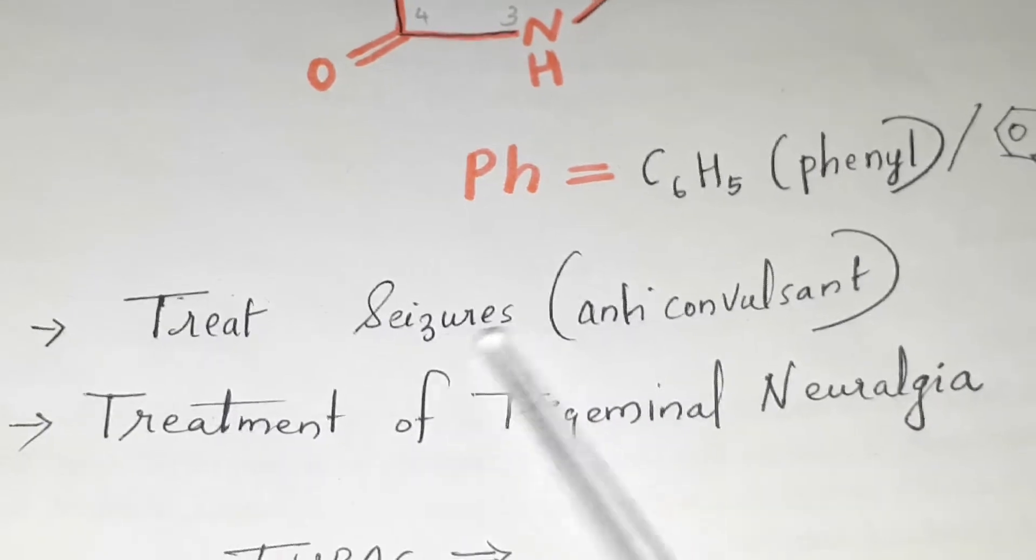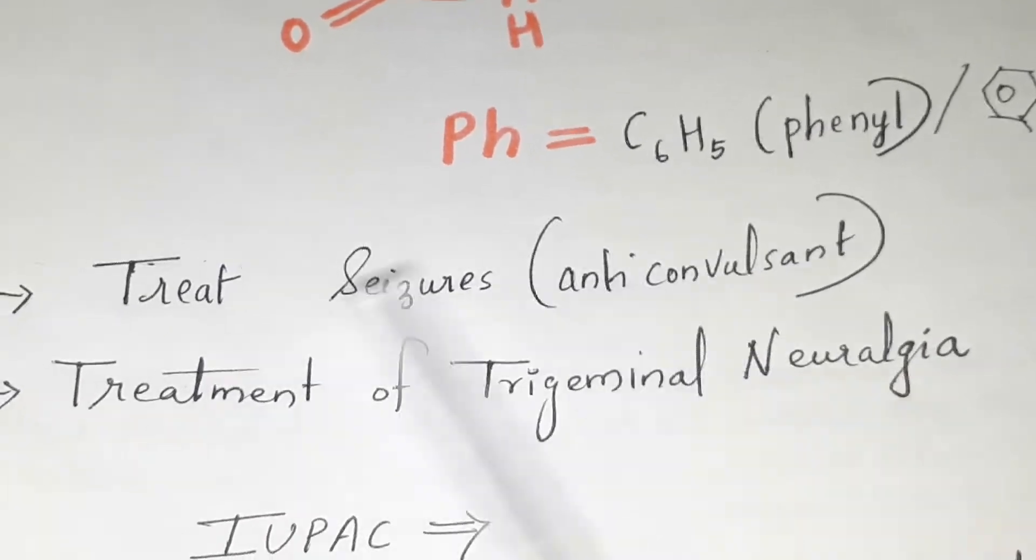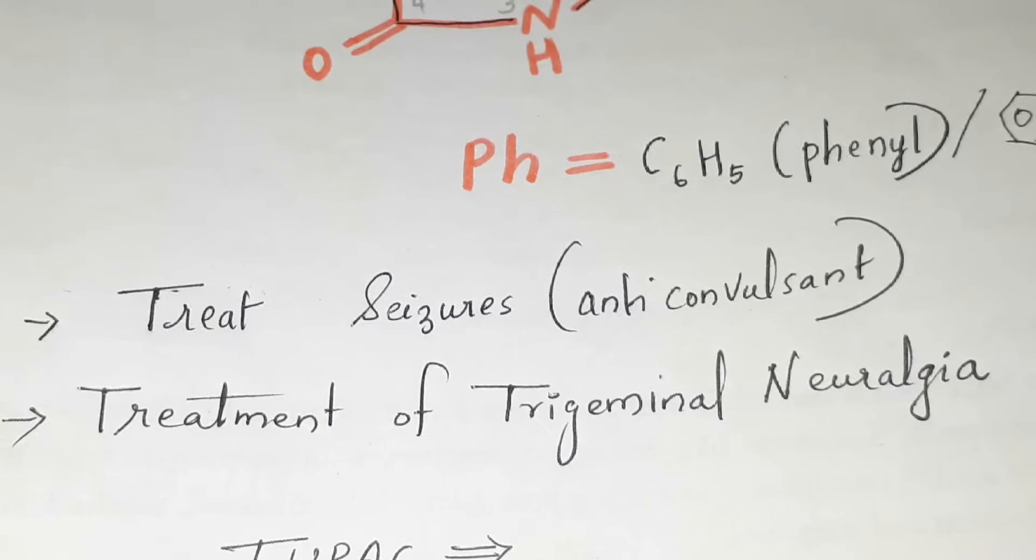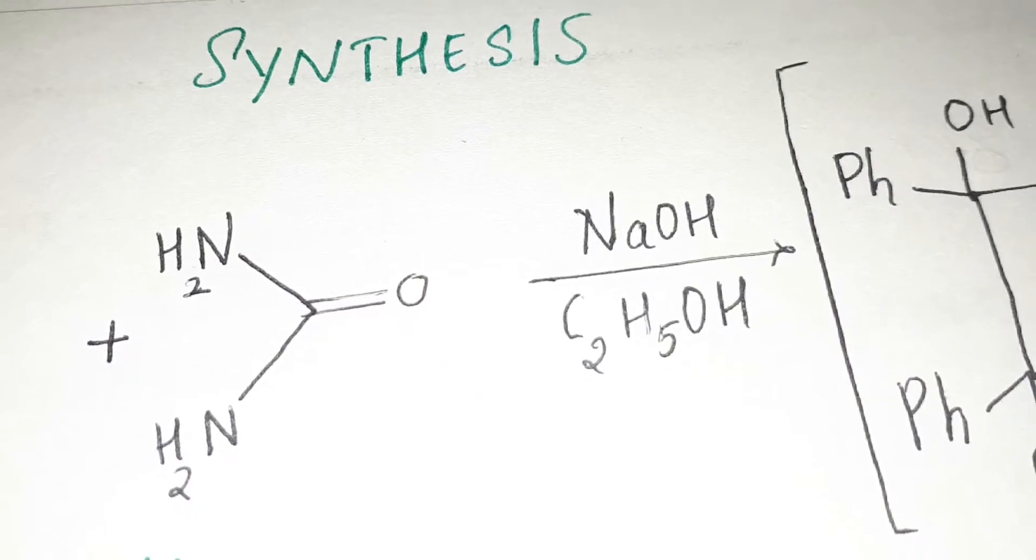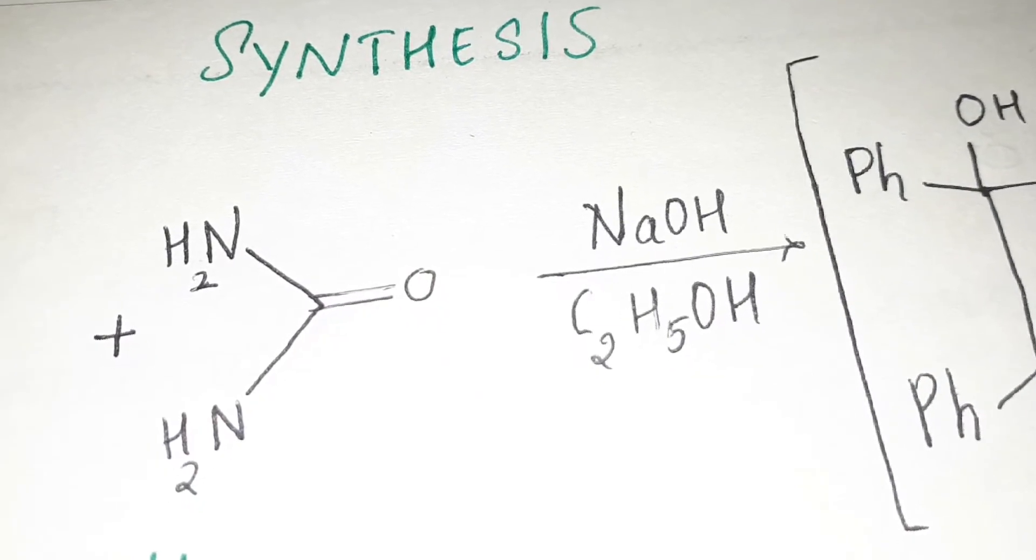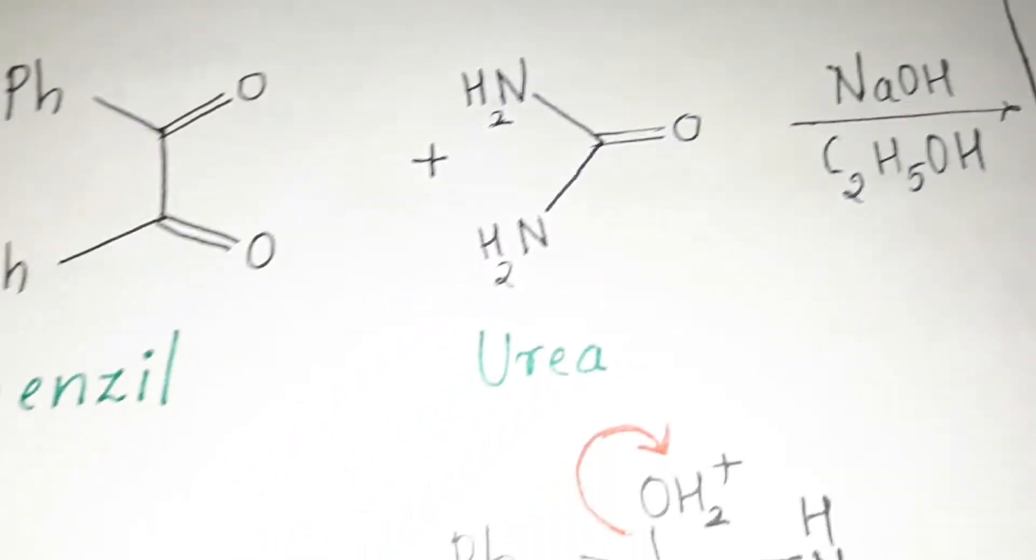Phenytoin is used to treat seizures, as it is an anti-convulsant, and is also used for the treatment of trigeminal neuralgia. Next is the synthesis of phenytoin. First, we have benzyl and urea.